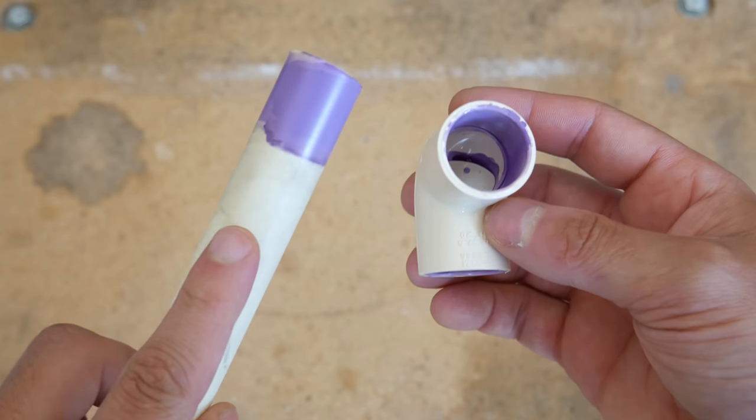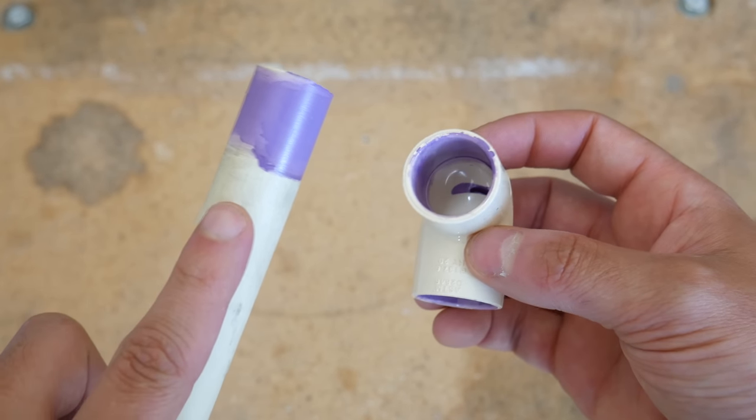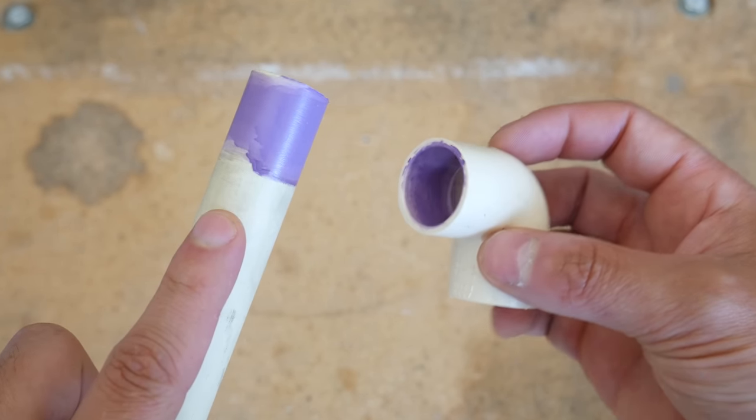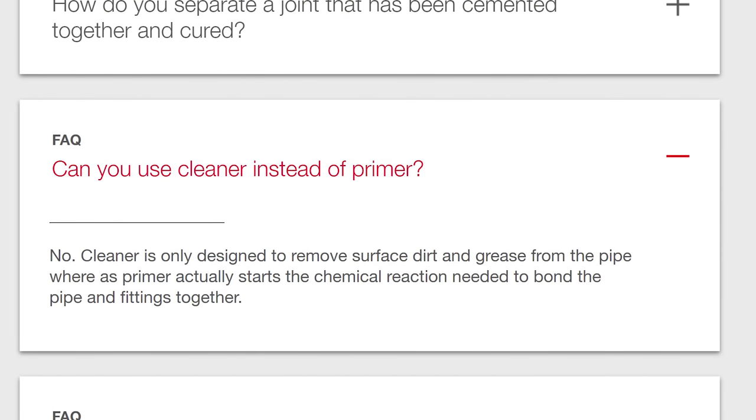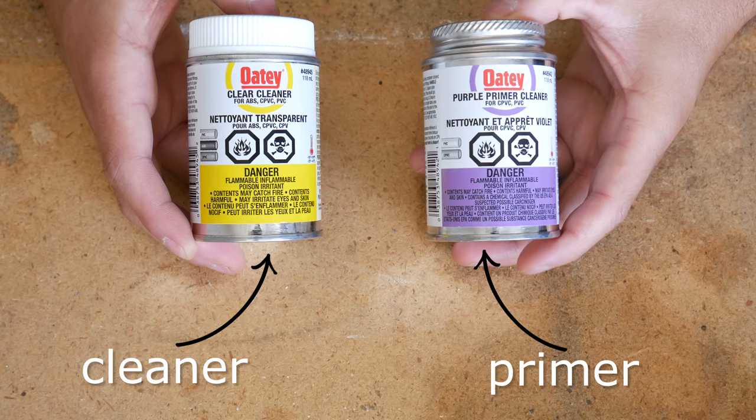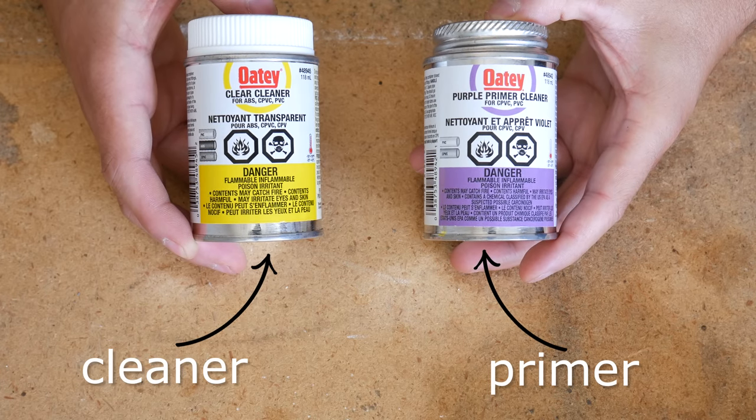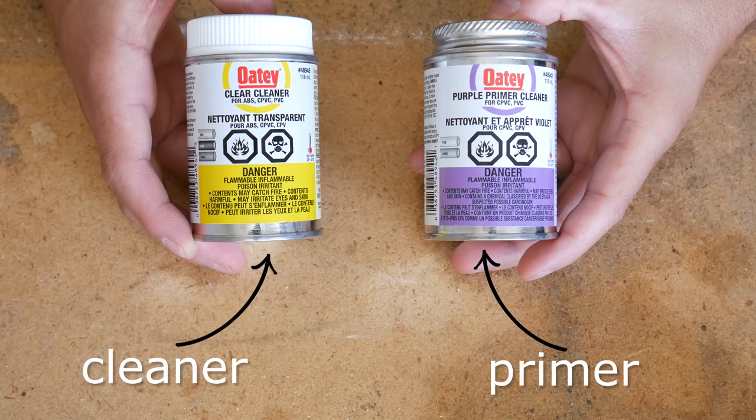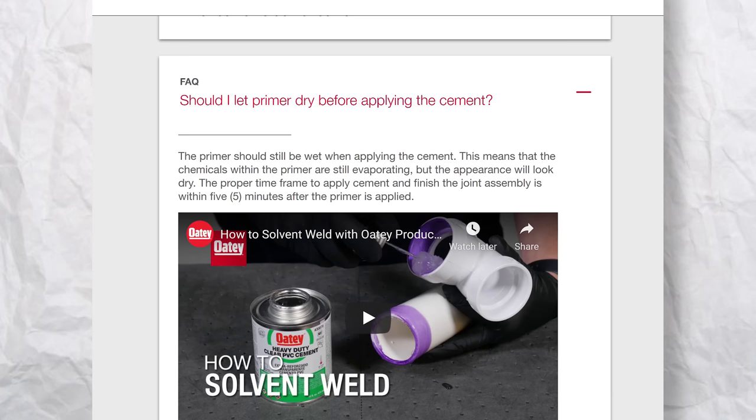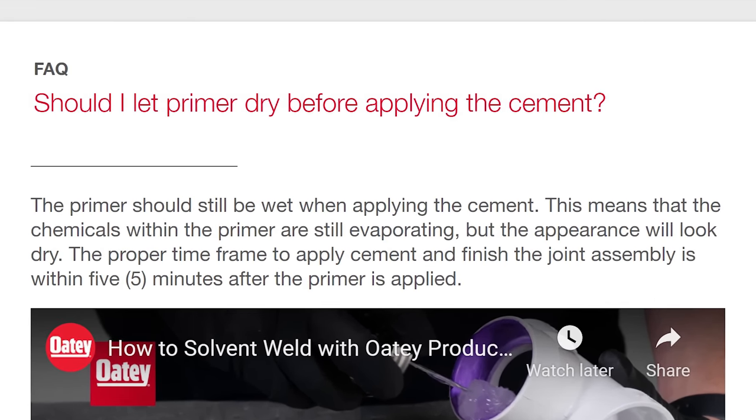Number five is not priming PVC or CPVC before cementing them together. Contrary to popular belief, priming is not cleaning. Priming a fitting and pipe actually creates the chemical reaction needed that allows them to properly bond together. Furthermore, cementing or gluing should be done within five minutes of its application as per OD's instructions to ensure a proper bond.